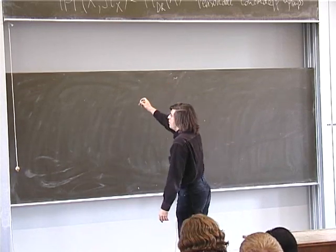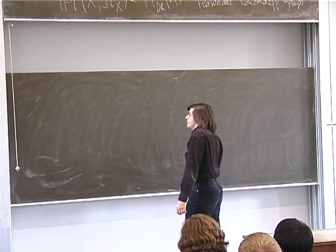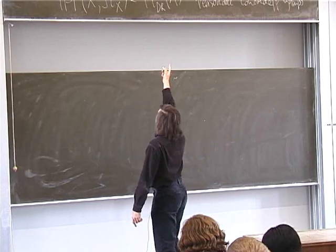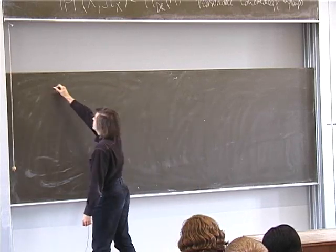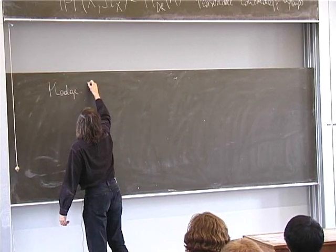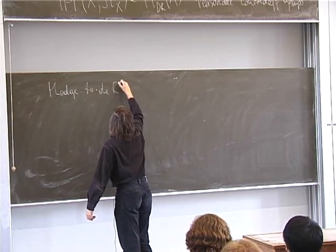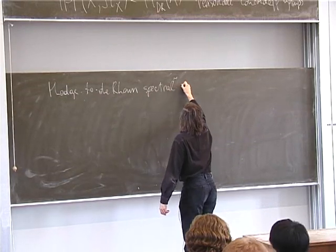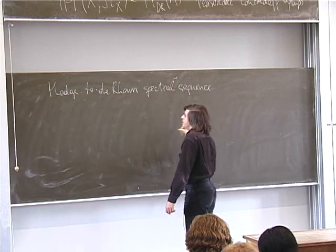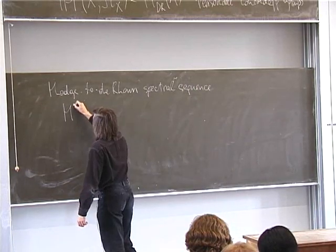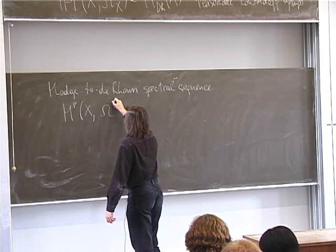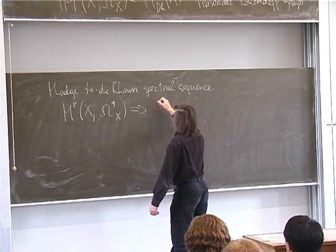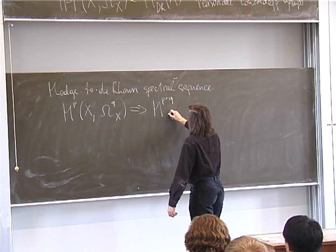When we have a complex like that, we can consider what is called the stupid filtration on it. We obtain a certain spectral sequence which converges to the de Rham cohomology group, and it's called the Hodge-to-de Rham spectral sequence. So it starts with H^p of X with coefficients in Ω^q, and it converges to the de Rham cohomology groups.